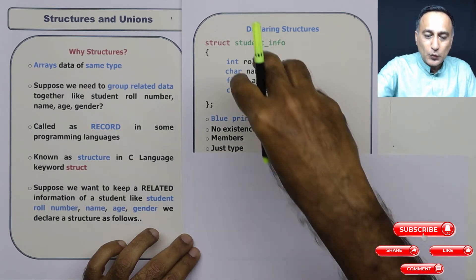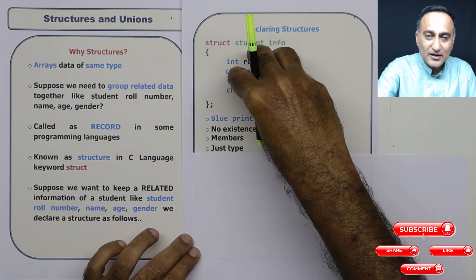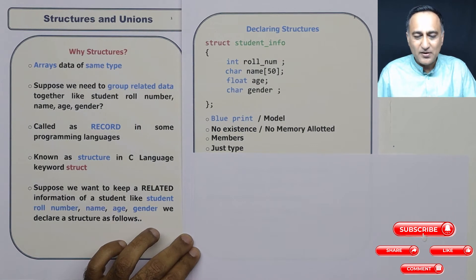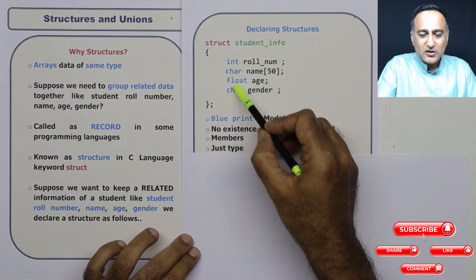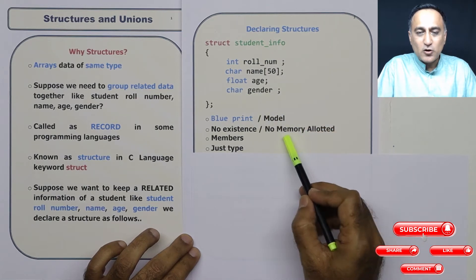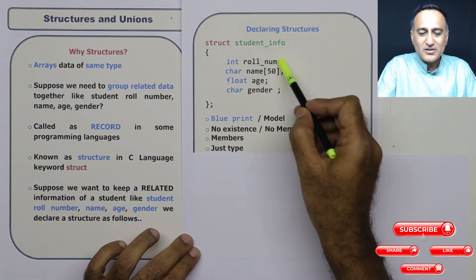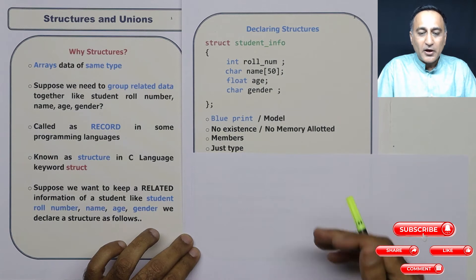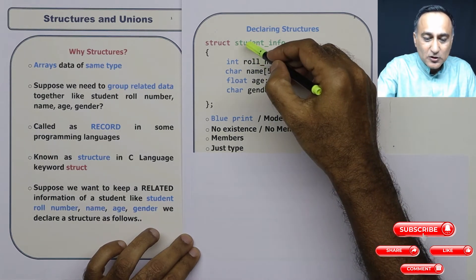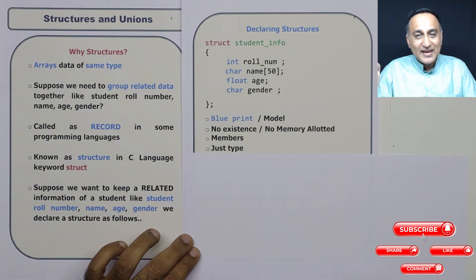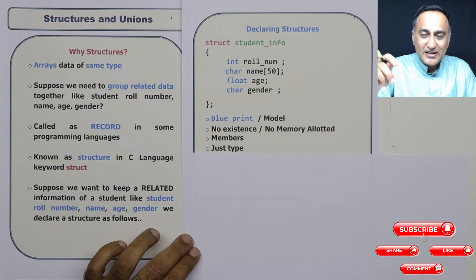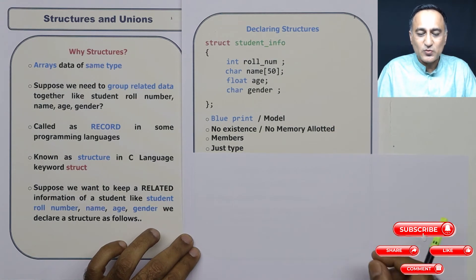Based on this model or the blueprint, we can create variables of this particular type. Now you need to understand these do not occupy any space or no memory is allotted to them because they are merely a model. When we create variables of the type struct student_info, then variables are defined and space is allocated for each structure as many structures as we create.